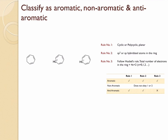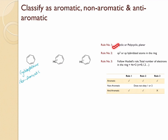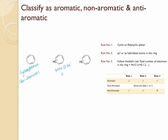Cycloheptatriene has three double bonds, but one atom is sp3 hybridized, so it cannot be aromatic — it is non-aromatic. For the corresponding cation, the structure is cyclic satisfying rule one, and all atoms are sp2 hybridized satisfying rule two. For rule three, there are three pairs of electrons — six electrons total — which is a 4n+2 system where n=1. So the cycloheptatrienyl cation is aromatic.